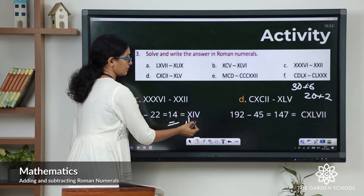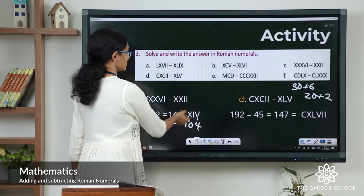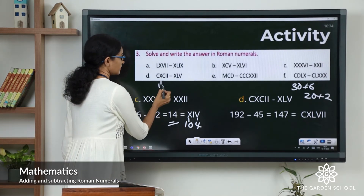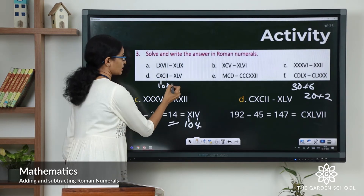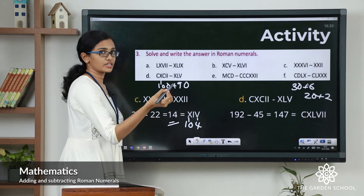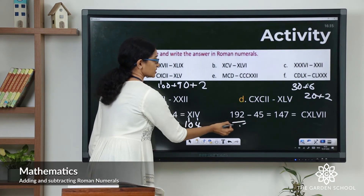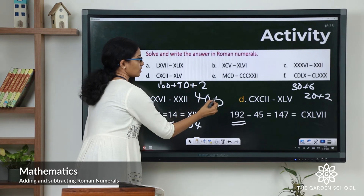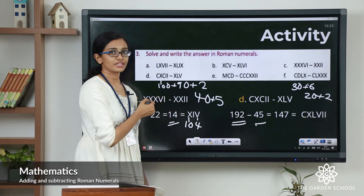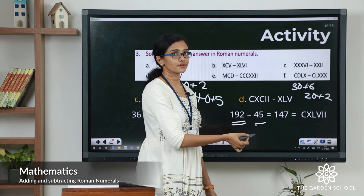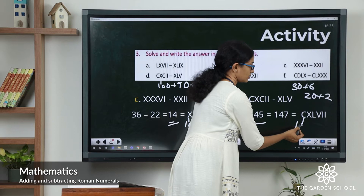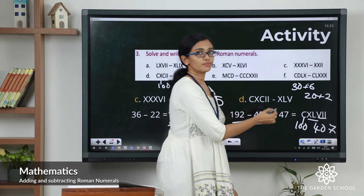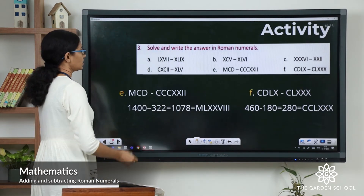14 is 10 plus 4 — so 10 plus 4 gives the Roman numeral XIV. Now question D: C is 100, XC is 100 minus 10 equals 90, then two I's equals 2 — so 100 plus 90 plus 2 is 192. The second numeral: XL represents 40, plus 5 is 45. 192 minus 45 equals 147. For 147: C represents 100, XL represents 40, and this represents 7 — so 100 plus 40 plus 7 is 147, written as CXLVII.